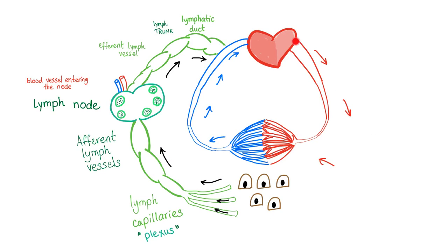Here is the heart pumping blood — arteries, then arterioles, there is the capillary bed, then we have venules and big veins. At the capillary bed, exchange occurs with the cell, but some fluid is getting lost in the interstitium or the extracellular space.